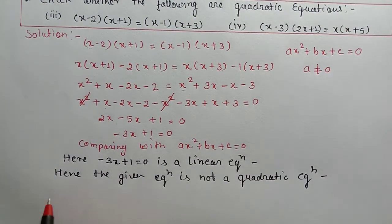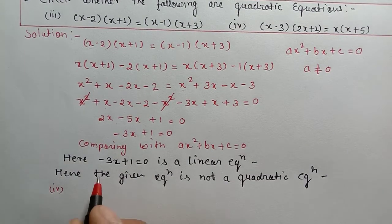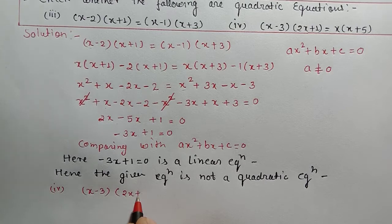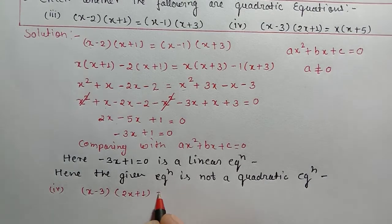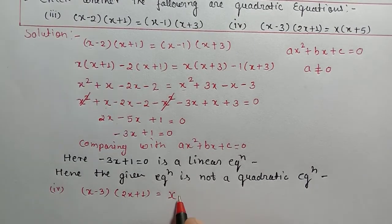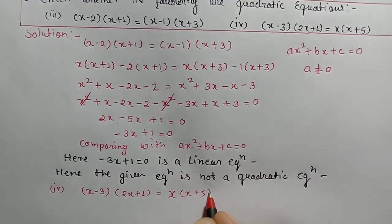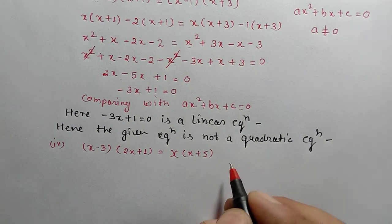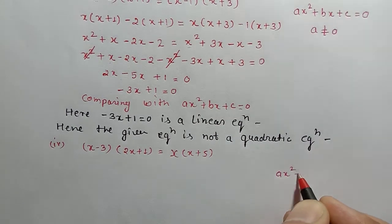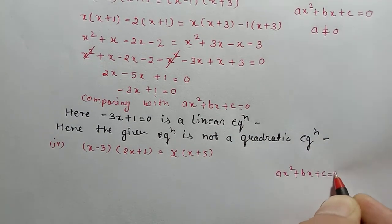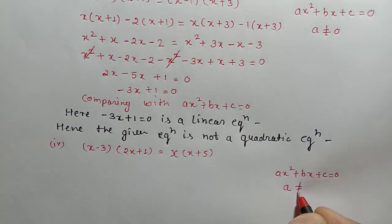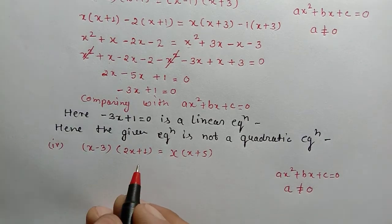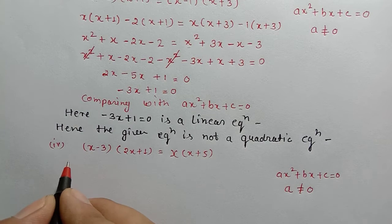Now we will solve the 4th part. The given equation for the 4th part is: (x - 3)(2x + 1) = x(x + 5). Here also, we need to determine whether this is a quadratic equation or not. For that, we compare with ax² + bx + c = 0, and a should not be equal to zero. So let us solve it.